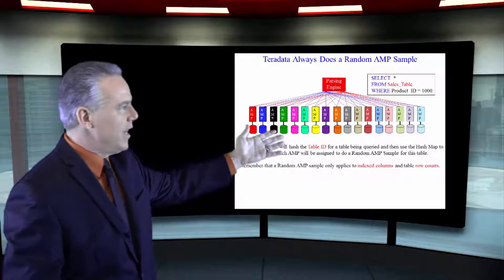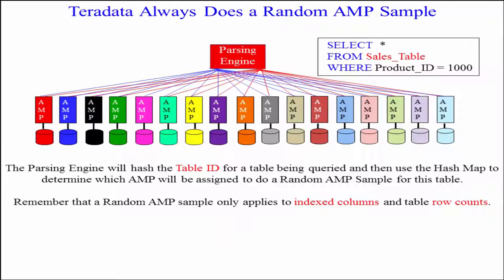select everything from sales table where product ID is equal to 1000, Teradata will even say, did they collect statistics? Oh, they did? We know it's there. I want you to do a random AMP sample anyway.